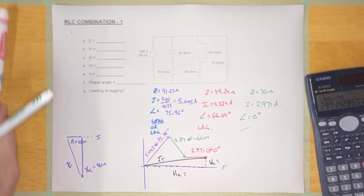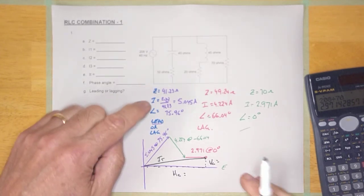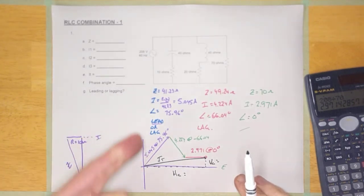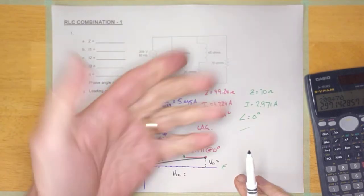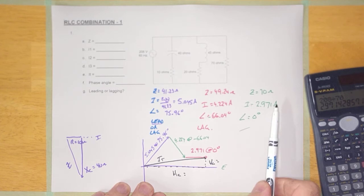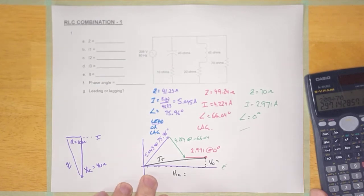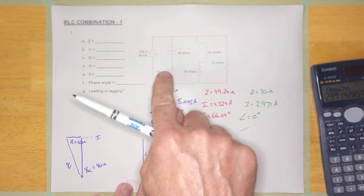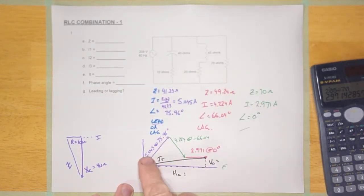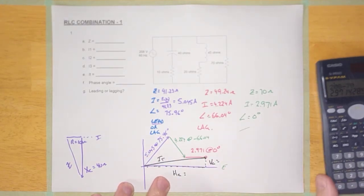Hey guys, welcome back. We're still working on this RLC combination circuit. What we've done so far is calculate the impedance, the current, the phase angle, and whether the circuit leads or lags for all three circuits. The only reason to calculate the impedance is so that I can calculate the currents, and the reason I need the angles is so that I can calculate the correct I total. We're working on a parallel circuit here, which is why we have to add the currents together as phasors.